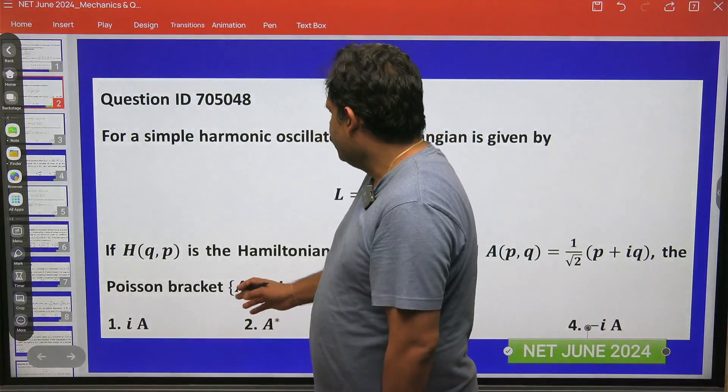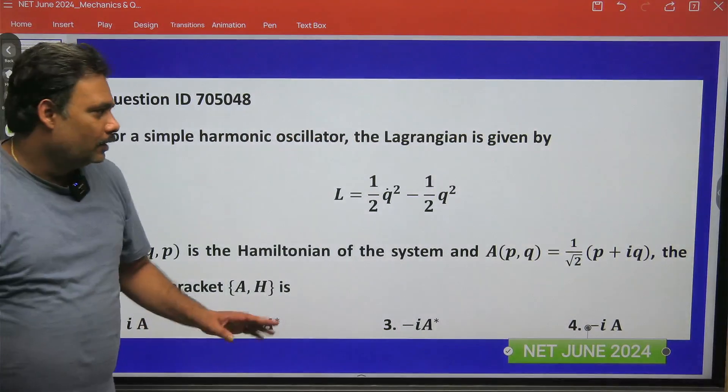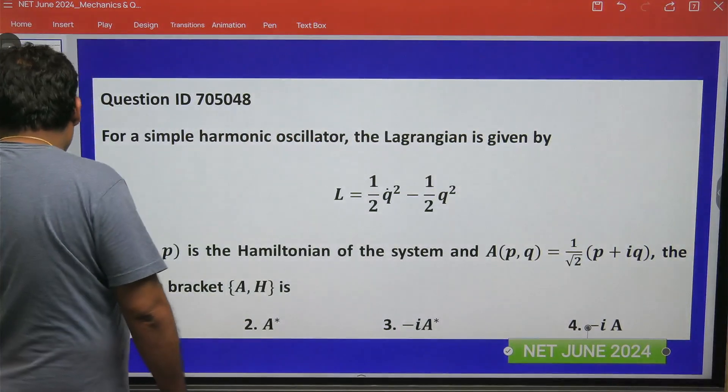What will be the Poisson bracket between A and H? This is a very simple straightforward question. Let us try to solve this one.